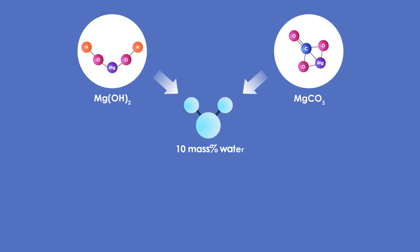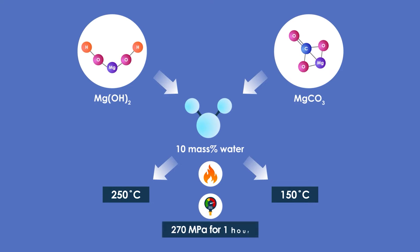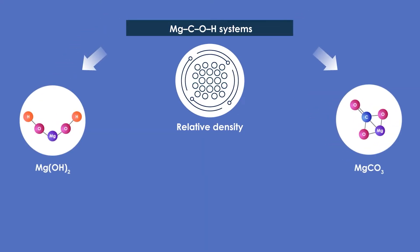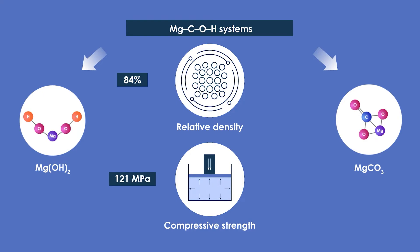They found that when magnesium hydroxide and basic magnesium carbonate with 10 mass percent water were heated at 250 degrees Celsius and 150 degrees Celsius respectively under a pressure of 270 MPa for an hour, the relative density and compressive strength were 84% and 121 MPa for magnesium hydroxide, and 88% and 275 MPa for magnesium carbonate.